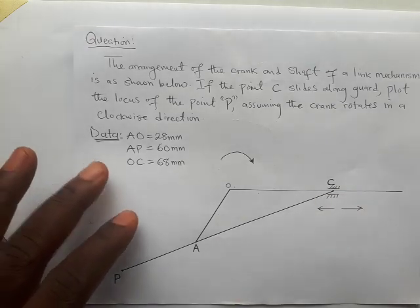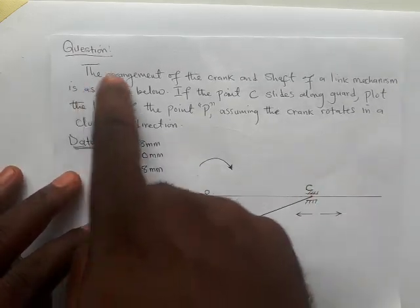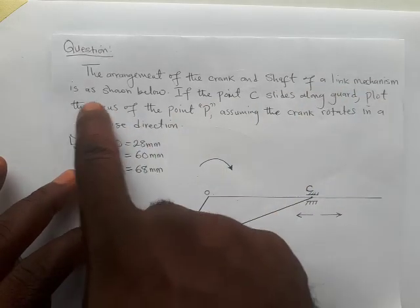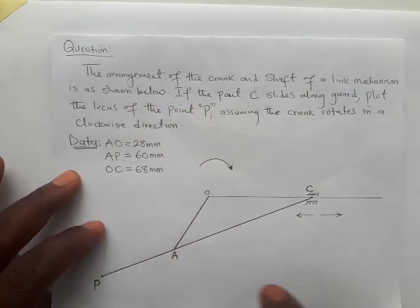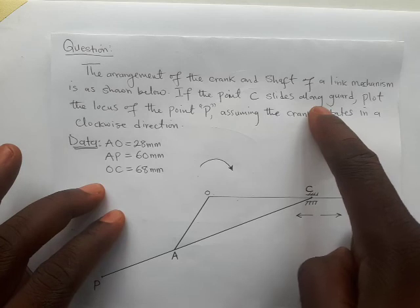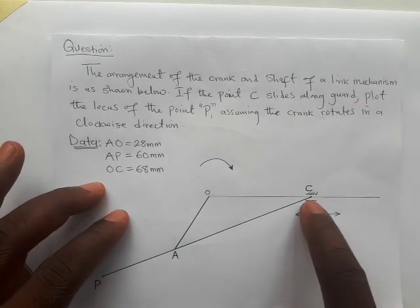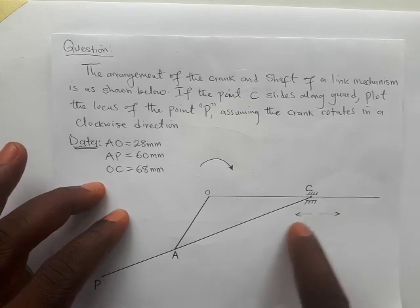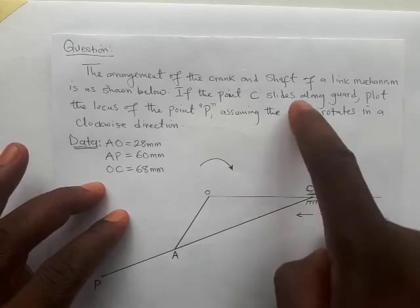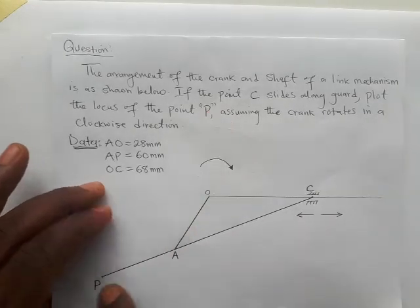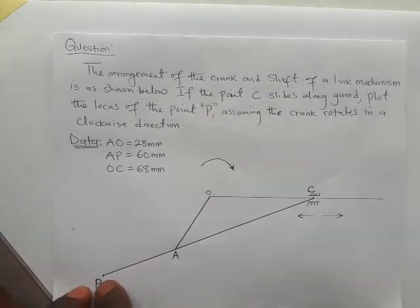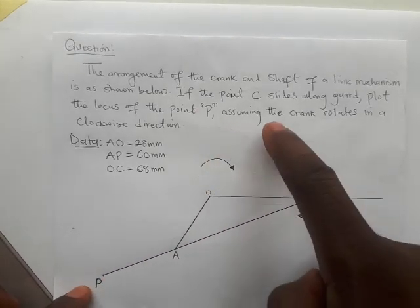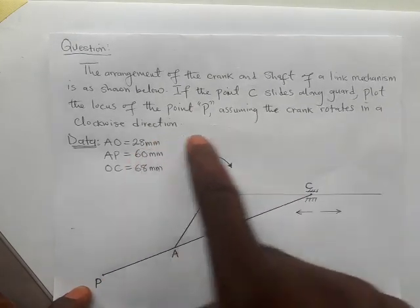This is a question: the arrangement of the crank and shaft of a link mechanism is as shown. If the point C slides along a guide, as indicated by these arrows, slides along that flow — the locus of the point P. There's a point P here on the link mechanism you are required to plot the locus of, assuming the crank rotates in a clockwise direction. This is the crank.